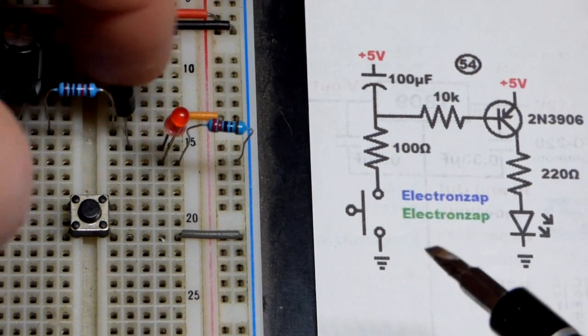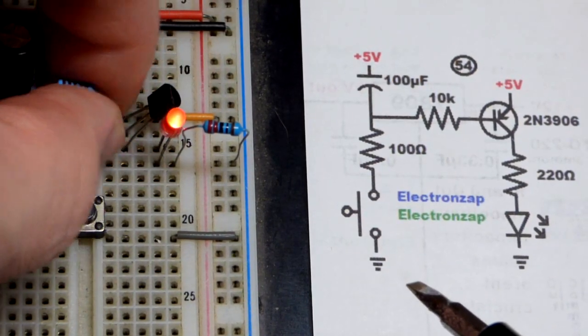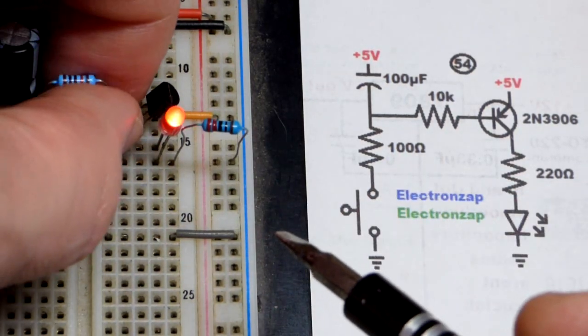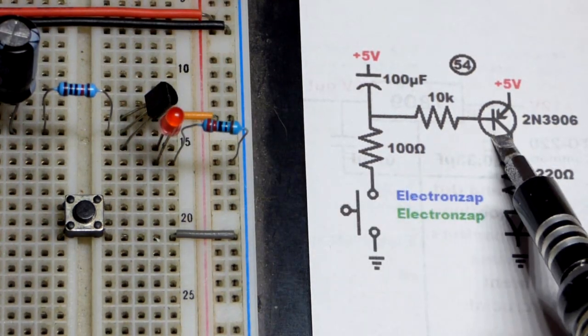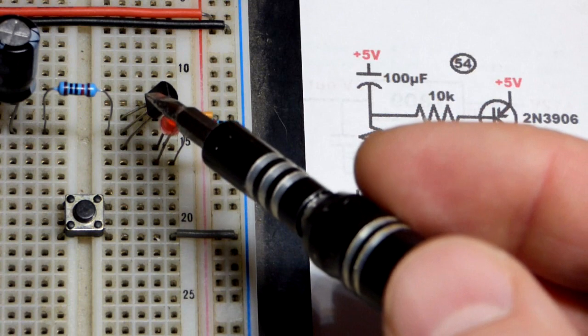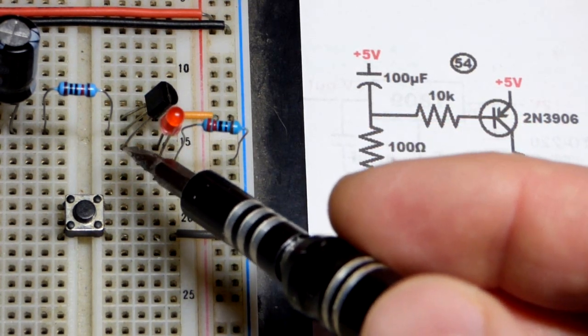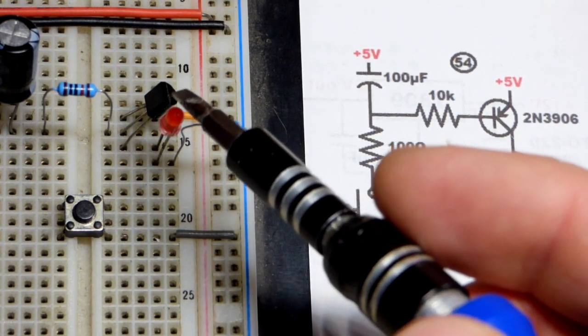The 2N3906 has the same pin layout as the 2N3904. We just need a little bit of current flow to allow much more to go through. If you're looking at the flat side, left pin is emitter, middle pin is base, and right pin is collector.